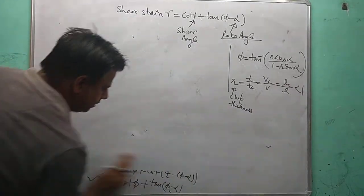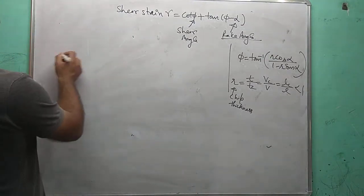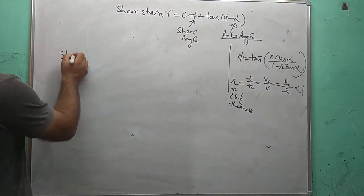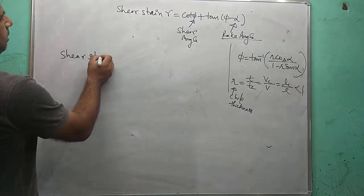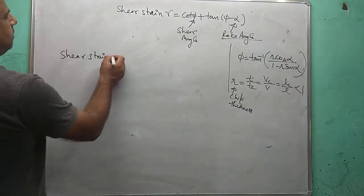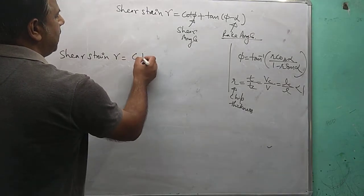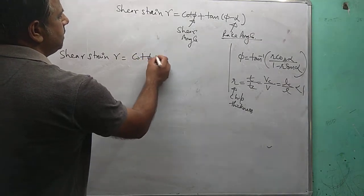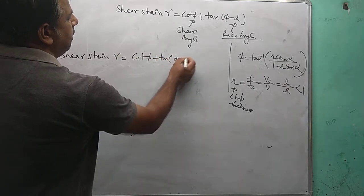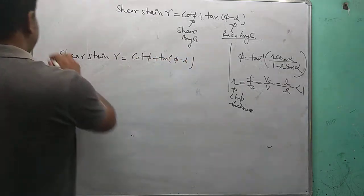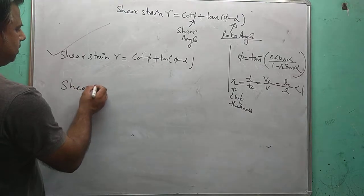So finally, the expression for shear strain comes out as: shear strain gamma is equal to cot phi plus tan(phi minus alpha).